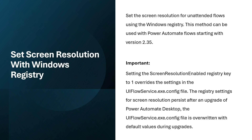The first solution is to set the screen resolution with the Windows Registry. This method can be used with Power Automate flows starting with version 2.35 and above. An important part of this is that setting the screen resolution enabled registry key to 1 overwrites the settings in the UIFlow service.exe.config file.